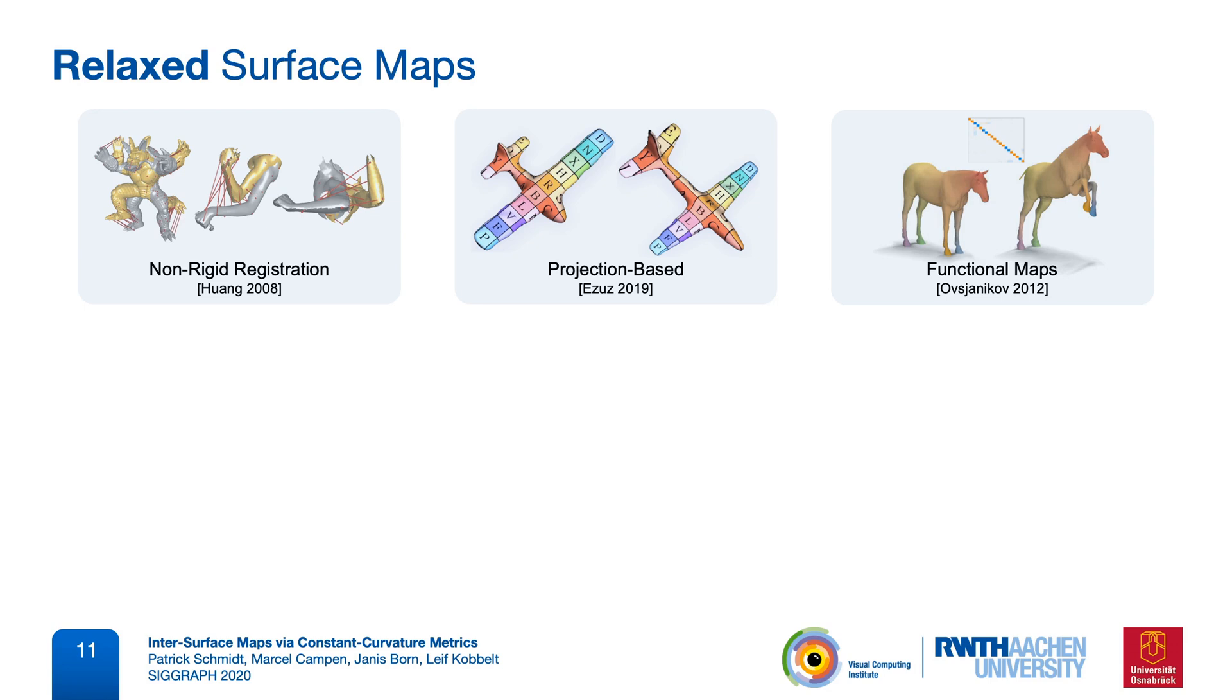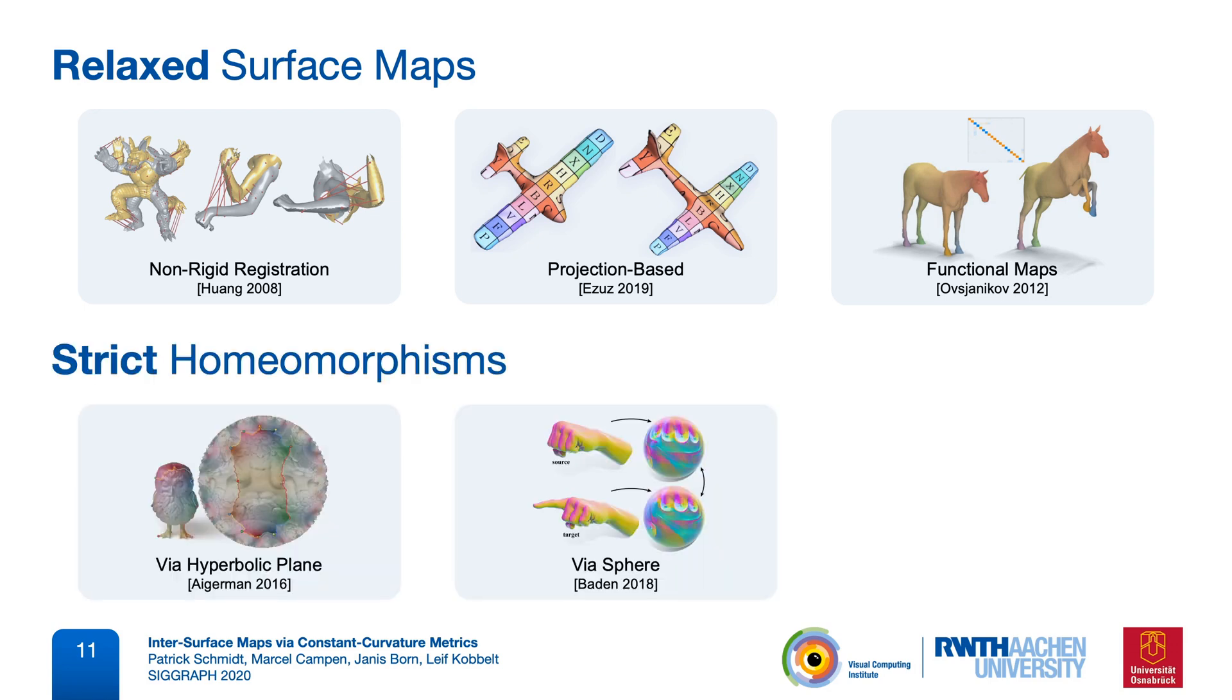Other approaches do produce surface homeomorphisms by construction, usually by mapping via a continuous intermediate domain. However, direct distortion control is more difficult in this setting, and last year we presented a method that does optimize mapping distortion via the plane, but it is restricted to disk topology surfaces.